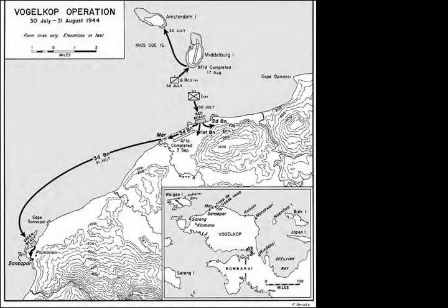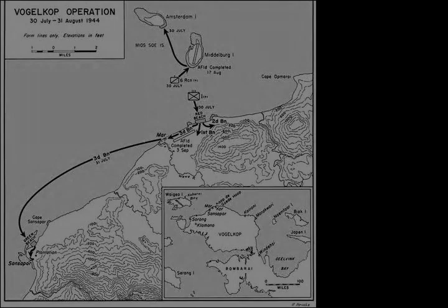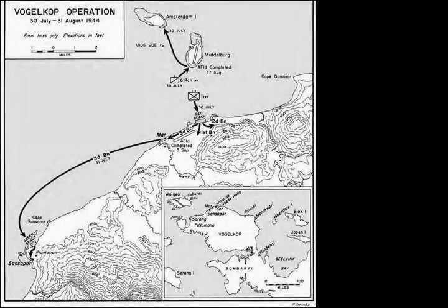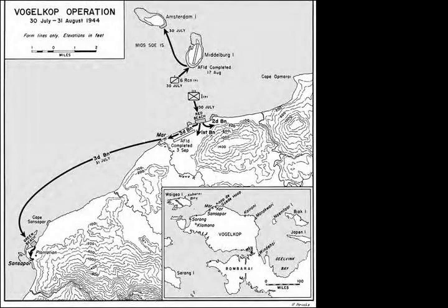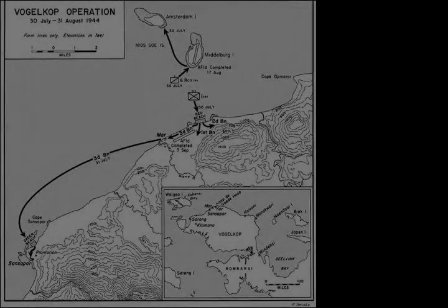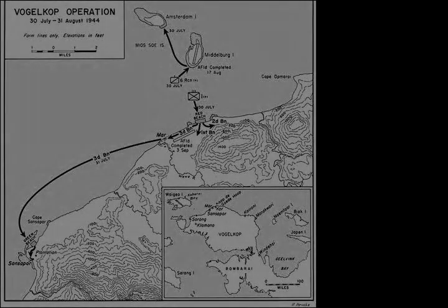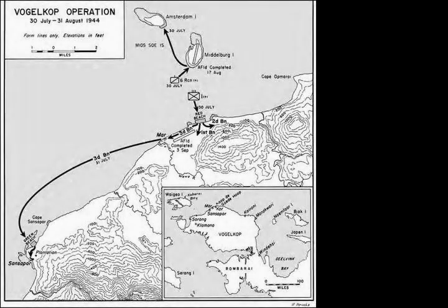Eventually, the runway for fighter aircraft was built on Middleburg Island and for bombers near Mar to the northeast, while Sosapa remained a vital air warning radar station. Ships patrolled the coastline throughout the month-long campaign, keeping the Japanese at bay. Operation Globetrotter ended on 31 August, and General Douglas MacArthur's last point of landing on the way back to the Philippines was at Sansapa. On 31 July, shore-to-shore landings from Cape Opmeri were carried out at Sansapa, and the Japanese garrison at Manakwari was cut off and attempted to retreat to Sorong.